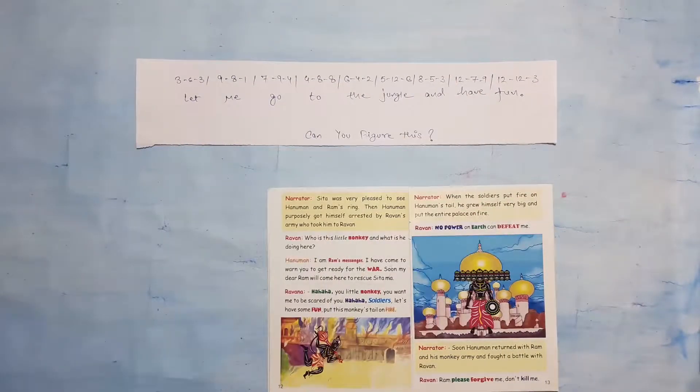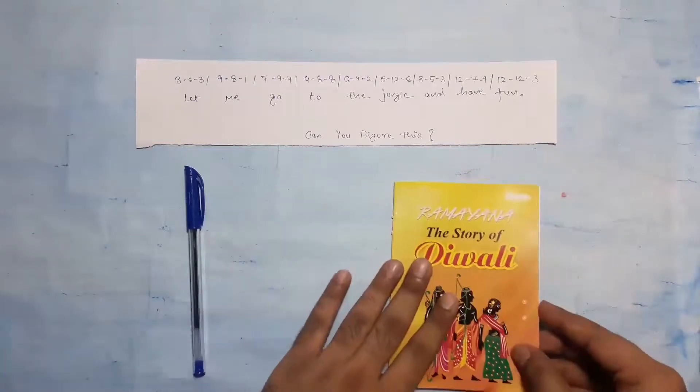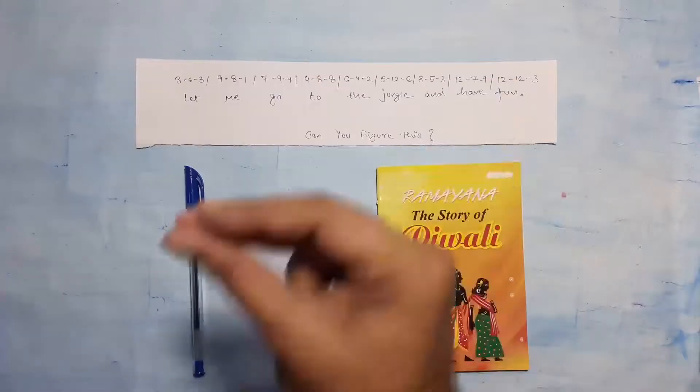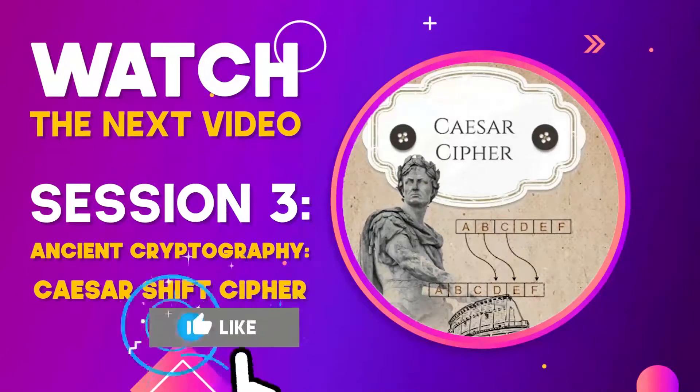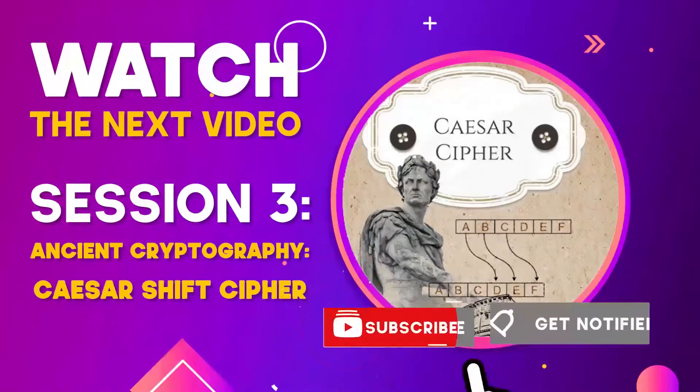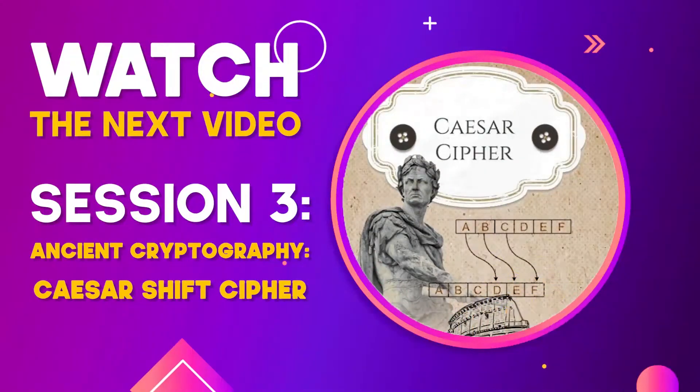We figured it out — this was so easy! So in today's session, you have learned about cryptography which uses codes and ciphers. You have learned what a code is and what a cipher is. Keep coding and keep learning, and I will see you in the next session with another fun exercise on cryptography — that will be ancient cryptography. Till then, like our video, subscribe to the channel, and don't forget to share it with your friends and family if you liked it.